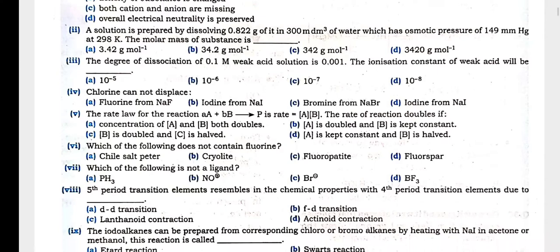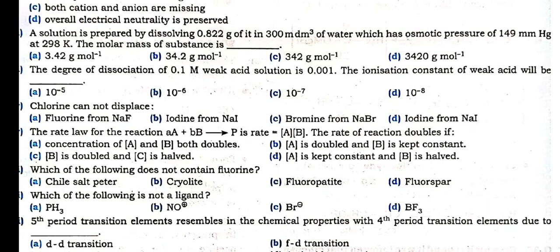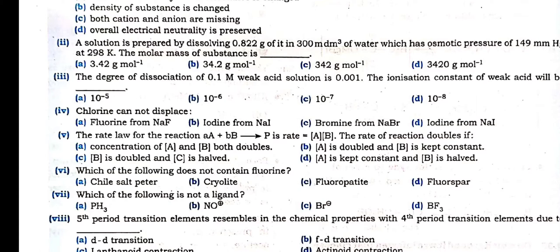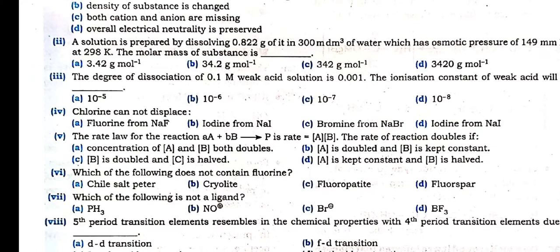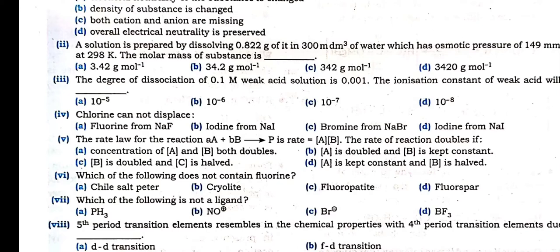Moving ahead to the third question: degree of dissociation of 0.1 molar weak acid from ionic equilibria is 0.001. The ionization constant KA will be what? The formula for KA is alpha² × C. Alpha is the degree of dissociation, given as 0.001. Concentration C is 0.1 molar. So KA = (0.001)² × 0.1. When you substitute, you get the answer as 10 raised to minus 7.